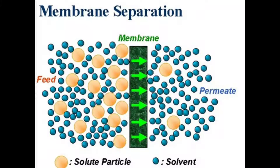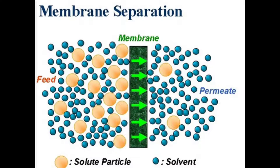Whatever the impurity is left behind. Whatever fluid is permitted through the membrane separation — it only allows the solvent particles, that is water — and it screens out the solute particles. Whatever pure liquid is created after the membrane separation is called the permeate. This is the mechanism behind membrane separation: it only allows certain particles to pass through the membrane.